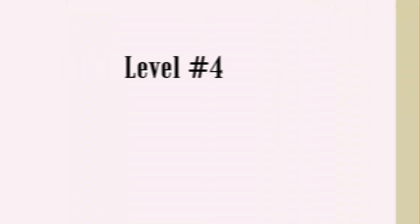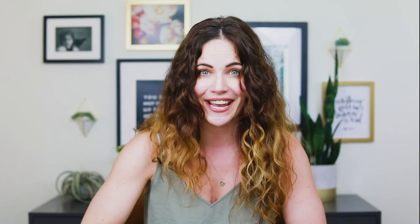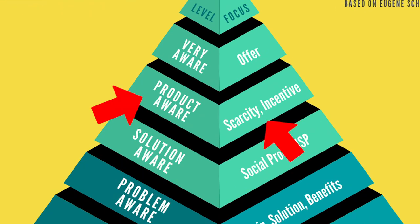Moving on to level number four of customer awareness: product aware. At this level, your prospect is already familiar with your product. Chances are they're already a lead, a follower, or a subscriber. They're familiar with the problem you're addressing and they know of other solutions that exist in the market. They've made the connection between their pain and what your product can do to help them solve it, but they are not sold quite yet. So at this level, you need to do some extra convincing. This is best done by injecting some scarcity or giving them an incentive to buy now, such as a free trial, a discount, or a bonus.